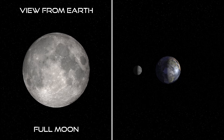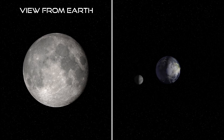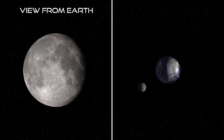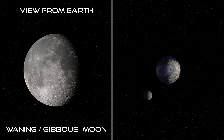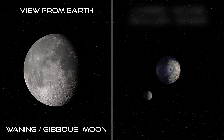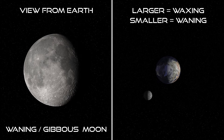As the Sun sets in the west, the full Moon will rise in the east. Now the Moon will begin to get smaller in size as we see here on Earth. This is called a Waning Moon, and it's also gibbous. So, as the Moon gets larger it's waxing, and as it gets smaller it's waning.